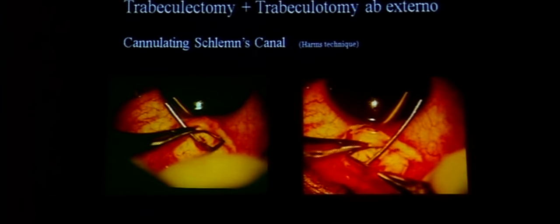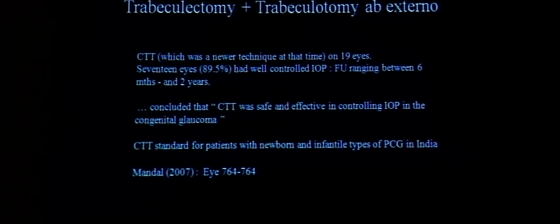In 19 eyes, IOP was well controlled in 17 eyes for a period of two years without medication, leading them to conclude that the combined procedure was safe and effective in controlling IOP in congenital glaucoma. Since then, trabeculotomy ab externo with trabeculectomy has been the norm for primary congenital glaucoma in India, and Dr. Mandal and the Ahmedabad group have popularized the combined procedure over the years.